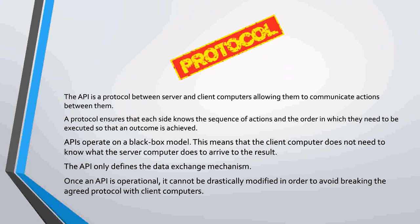Going back to computers, when we look at an API, we are looking at a protocol defined between a server and client computers. The protocol ensures that each side knows the sequence of actions and the order in which they need to be executed. If we think about the weather app, the start of the sequence is normally the client asking the API of the meteorological office for information. APIs operate on the concept of a black box model, meaning the client computer does not need to know what the server computer does in order to arrive at the result.